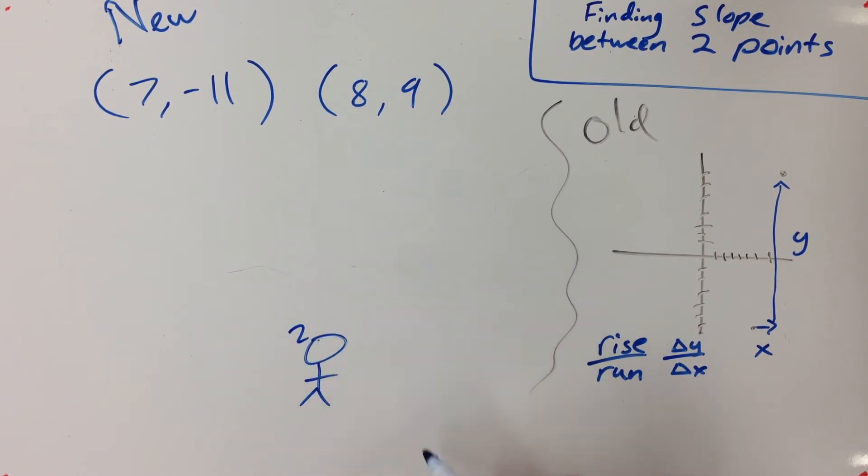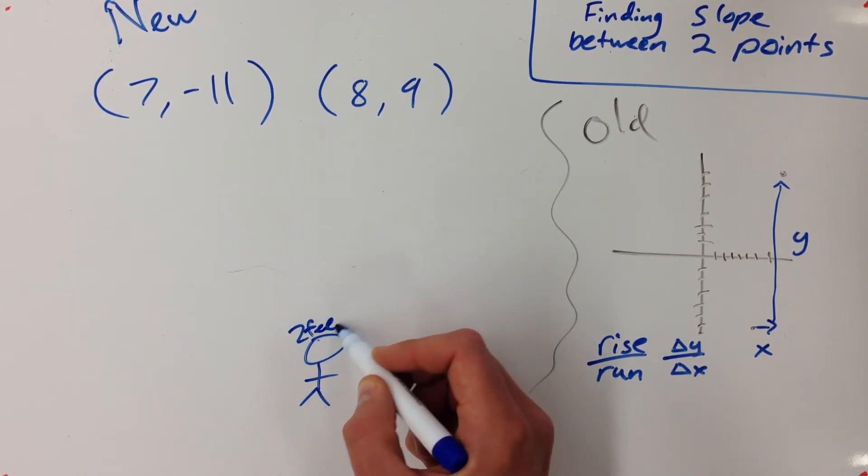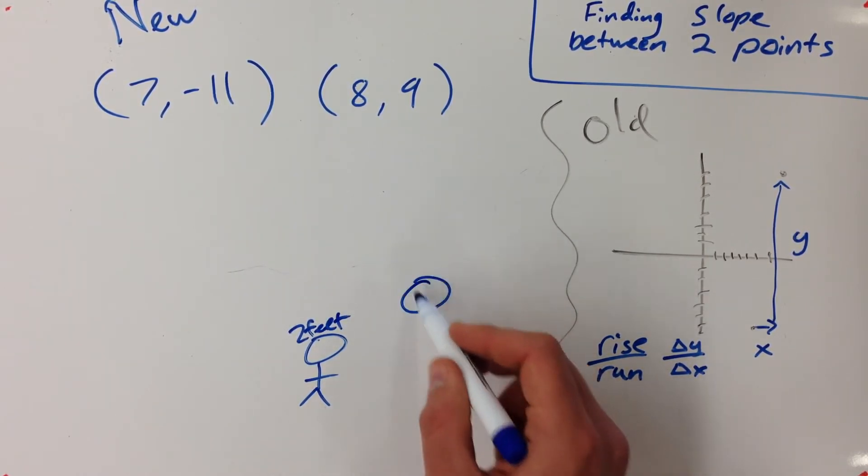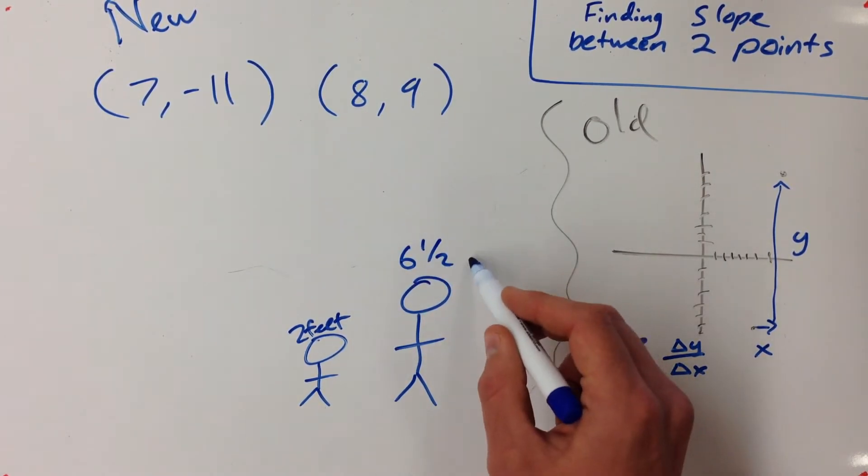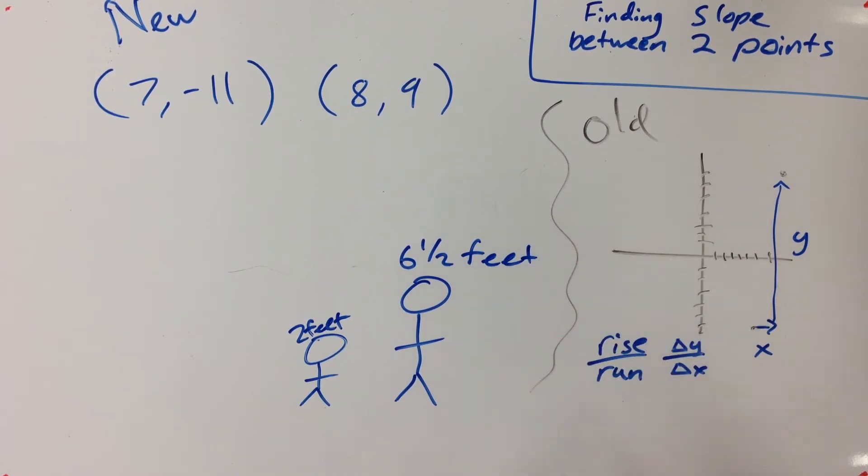And so if you think about like you as a little kid, let's say that you were two feet tall at some point. Well, right now I'm much taller than that. I'm like six and a half feet. So if I want to see how much taller I've gotten in my time, if I want to figure out the change that I had and change in height like we're just about to do over here, the way that you do that is you have to subtract them.